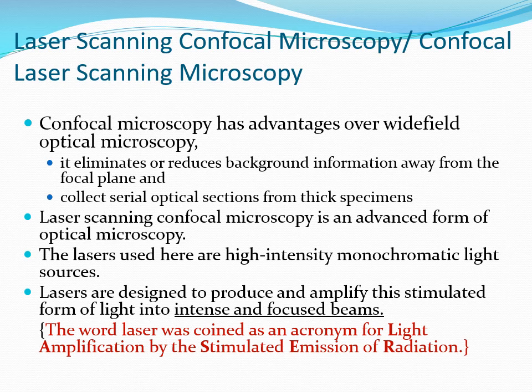Confocal microscopy is basically an advanced form of optical microscopy. The advantage over wide-field optical microscopy is that it eliminates or reduces background information from the focal plane. It is a modification — a modified form of fluorescence microscopy. The problem with fluorescence microscopy was that all the fluorescence emitted by all particles was captured, and the image obtained was not sharp; it was blurred.